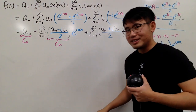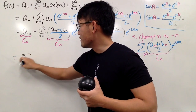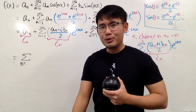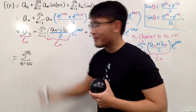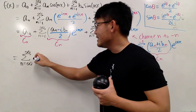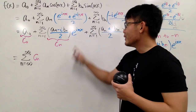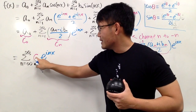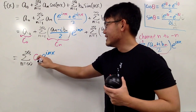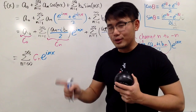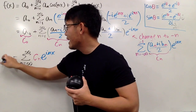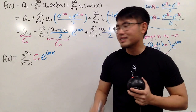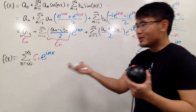Now we can write everything into one summation. We have the sum as n goes from negative infinity to positive infinity — including 0 — of cₙ times e to the i·n·x. Ladies and gentlemen, this is how the complex version of the Fourier series looks like: f(x) = Σ cₙ e^(inx). But we're not quite done yet, because we still need to find the formula for cₙ, otherwise we can't do any computations.